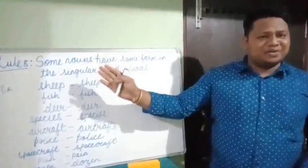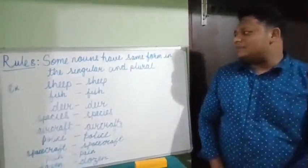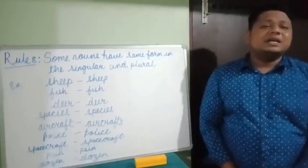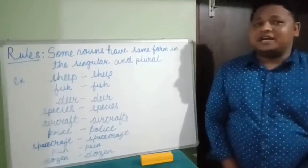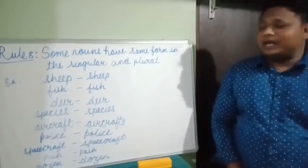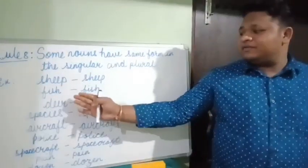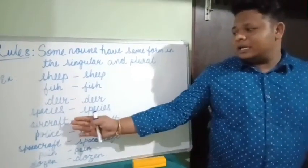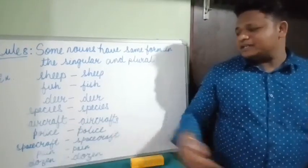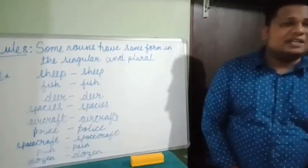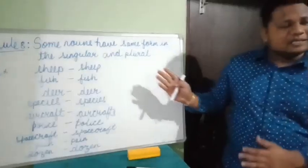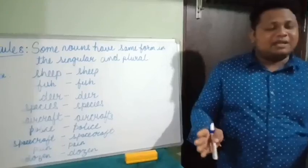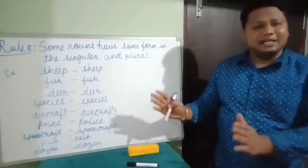Rule number eight, the final rule: some nouns have the same form in singular and plural. For some nouns, their form does not change in the plural form. For example: sheep, fish, deer, species, aircraft, police, spacecraft, pain, dozen. These are words whose plural form doesn't change — they remain the same in both singular and plural form.